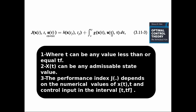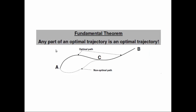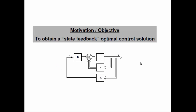The fundamental theorem of optimal optimization states that any part of an optimal path is itself optimal. For example, in a minimization problem, the cost function of the optimal path is less than any other. Any slice of it — for example from point a to c — is itself optimal. This principle is very important.